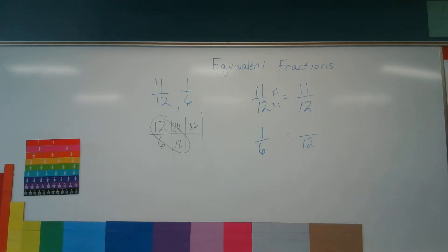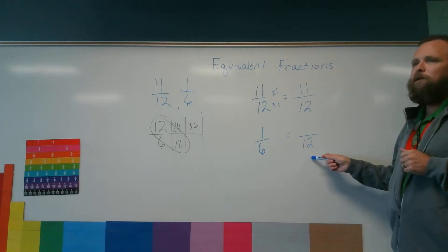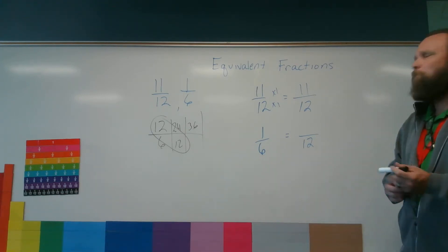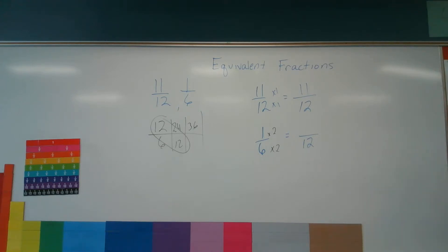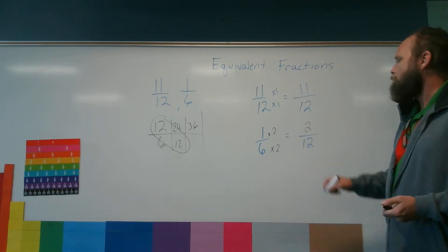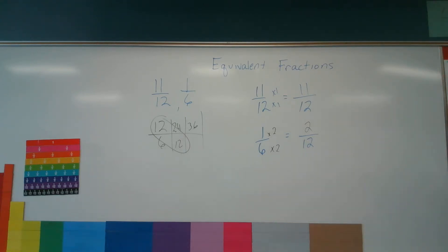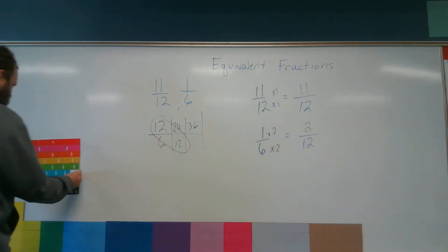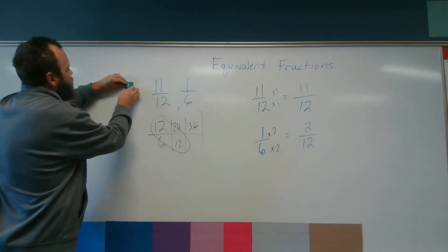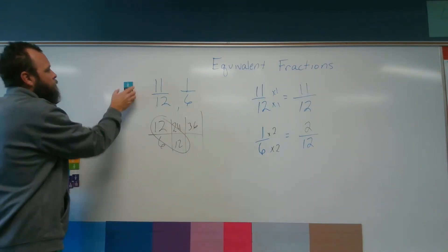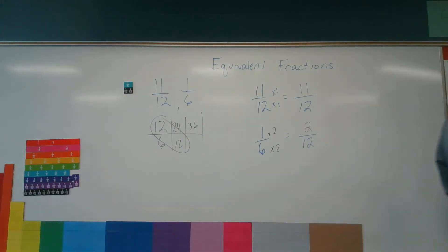Then I have 1 sixth. I need to change it to twelfths. And I ask myself: what do I multiply by 6 to get 12? You multiply by 2. And if I multiply my denominator by 2, I must also multiply my numerator by 2. And 1 times 2 is 2. So 11 twelfths equals 11 twelfths, and 1 sixth equals 2 twelfths. This is fairly easy, but it's something you have to be able to do in order to add or subtract fractions.